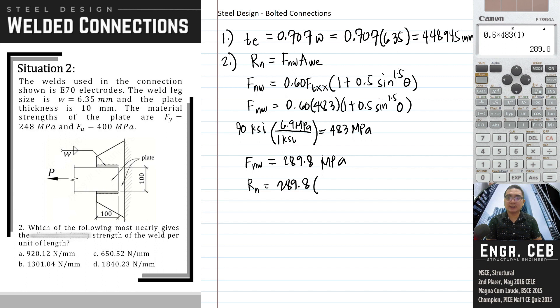Substitute: Rn equals 289.8. Area of the welds is simply the length of the weld times the throat thickness. The throat thickness is 4.48945, and since we are considering per unit length of the welds, we consider one millimeter length. That is 1301.04261 newtons per millimeter, and that is letter B.